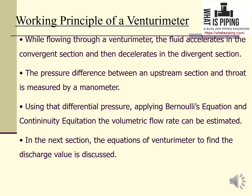The working principle: while flowing through a venturimeter, the fluid accelerates in the convergent section and decelerates in the divergent section, meaning fluid velocity increases in the convergent section and decreases in the divergent section. The pressure difference between the upstream section and the throat is measured by connecting a manometer. Using that differential pressure and applying Bernoulli's equation and the continuity equation, the volumetric flow rate can be estimated.